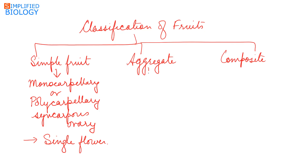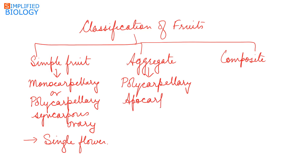An aggregate fruit develops from a polycarpellary apocarpous ovary, meaning there are many carpels and the carpels are free. Aggregate fruits also develop from a single flower.